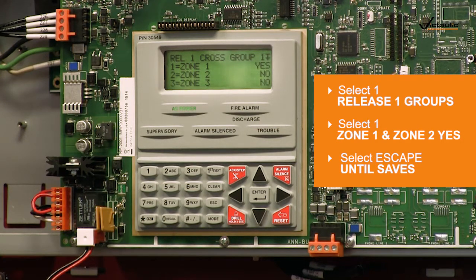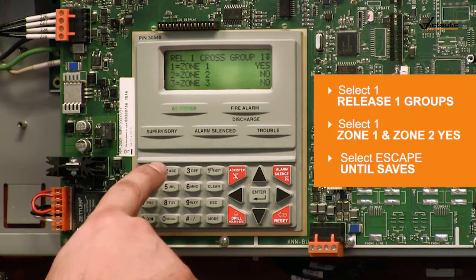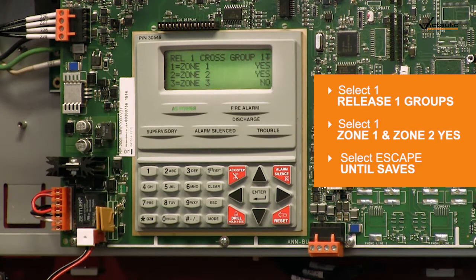Change Zone 2 from No to Yes by selecting 2 on the key panel. Push Escape until returned to the main menu.